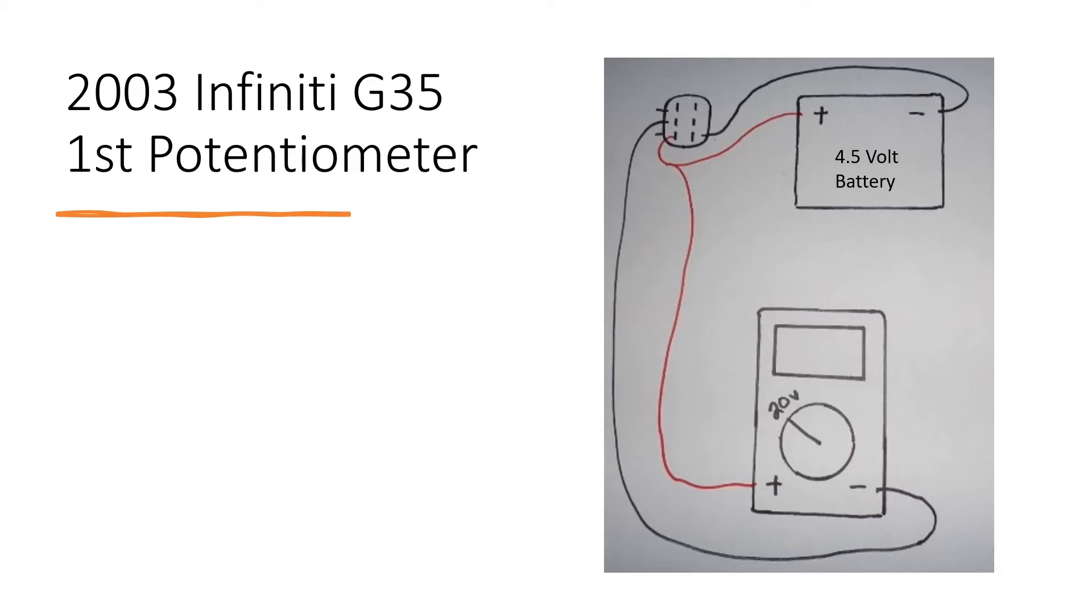After this is done, it should be reading about 4.35 volts in the idle position. As you press it in, it should stop at about 0.45 volts. Make sure to be testing for both spikes and glitches during these tests.